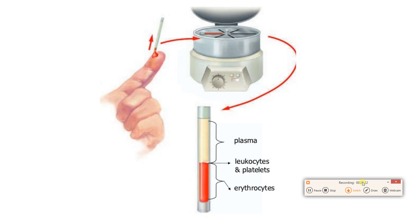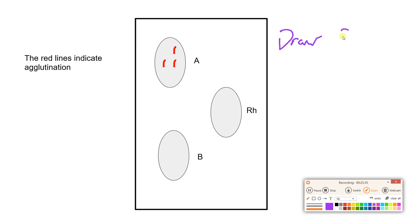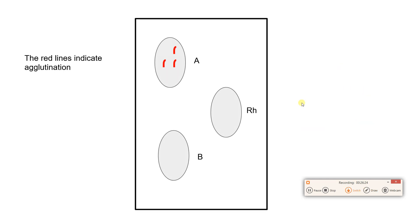What I want you to do is draw eight of these trays: one for O positive, one for O negative, one for A positive, one for A negative, B positive, B negative, AB positive, and AB negative — and draw the agglutination pattern you would see for each of these eight. I guarantee you'll get questions like that on your exam. If you're not sure or want to check your work, show them to your teacher. And with that, we are done with blood typing.